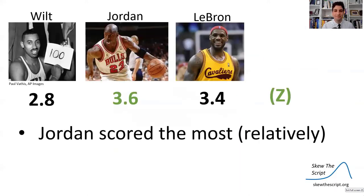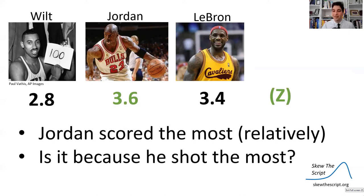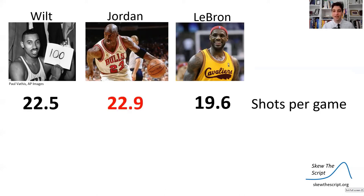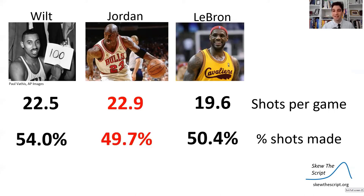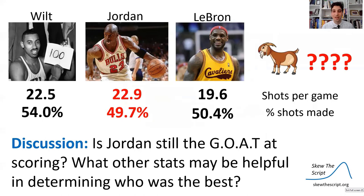Now we know Jordan scored the most relative to his era. But is it because he shot the most? Looking at shots per game, Jordan had the most at almost 23 per game, and also the lowest field-goal percentage of the three. So given these new statistics, is Jordan still the greatest of all time at scoring in your mind? What other stats might be helpful in determining who was best? This is something you'll assess in class.